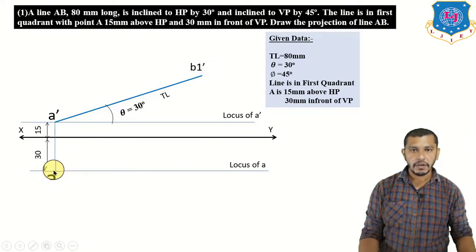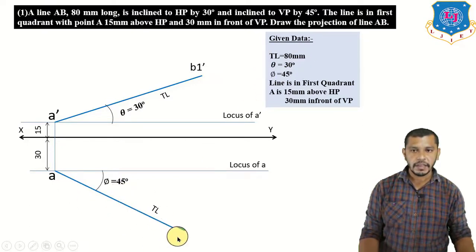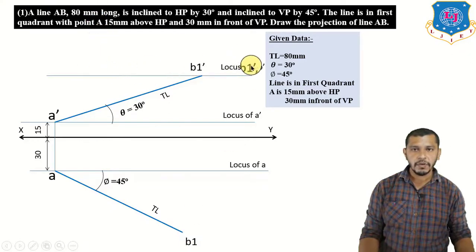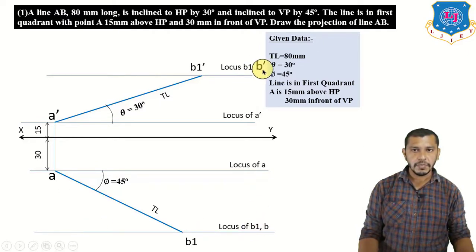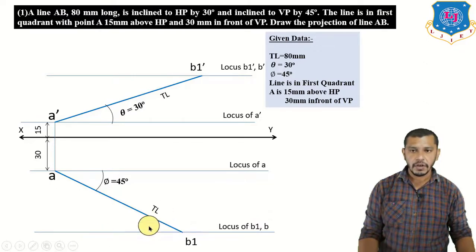From a, draw a line inclined at 45 degrees (phi) downward showing the true length of 80 mm to get b1, since the plan of point B will be below XY because the line is in the first quadrant. This gives the locus of b1-dash and b-dash, and the locus of b1 and b — point B will be found on these loci.